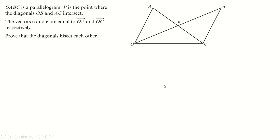We'll start with the A-level question. Here's a parallelogram, and it's essentially asking you to prove that the diagonals of the parallelogram bisect each other. That means it wants you to show that this diagonal here is split in half by this one and vice versa. Bisect means split in half. So essentially I'm trying to show that the length O to P is the same as P to B, and likewise A to P and P to C. It's suggested I use vectors, labelling this one as A and this one as C.